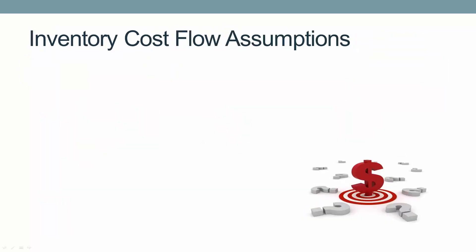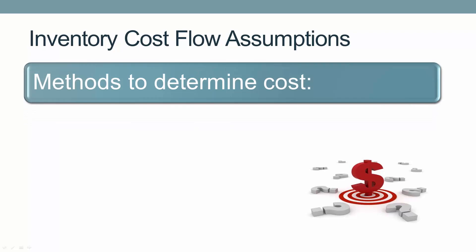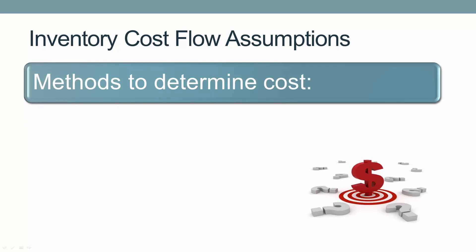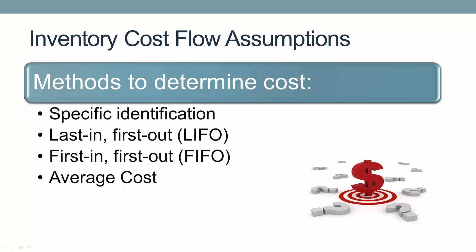There are four basic cost flow assumptions that can be used to determine cost of goods sold: specific identification, last in first out, first in first out, and average cost. I am going to take you through the calculations for the last three.